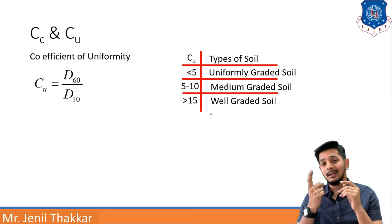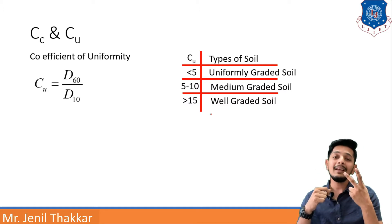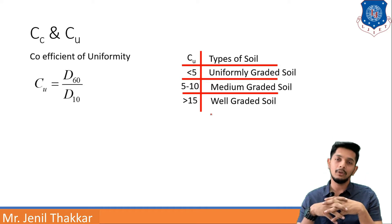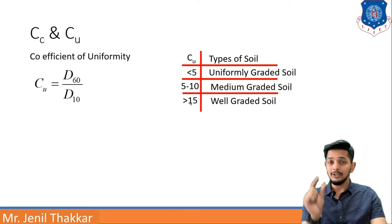So after deciding sand, silts to gravel etc you will get to know if it is uniformly graded, well graded or medium graded soil. That is coefficient of uniformity. Uniformity means uniformness.